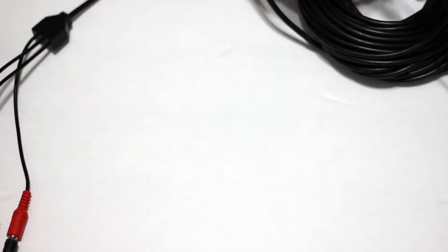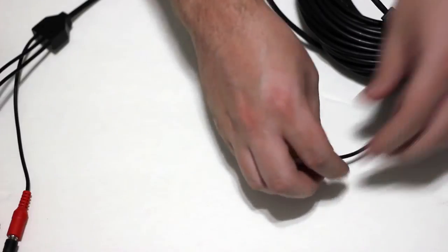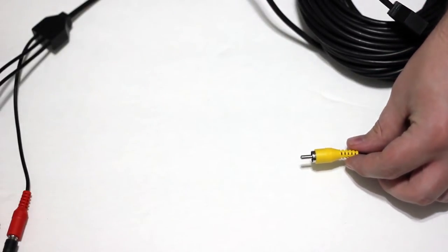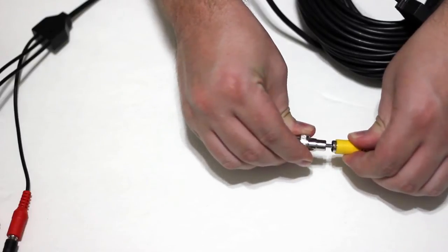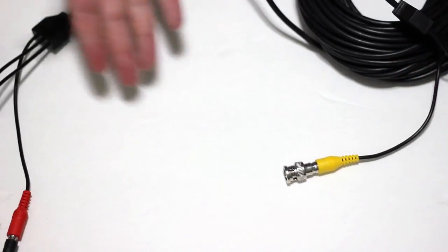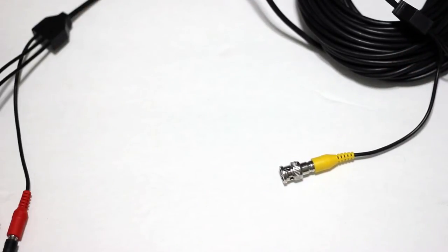And same story on the other end. You would take your additional RCA that's out by the microphone, put the same adapter on here. Now it's just like a BNC run that you would use to connect a camera.